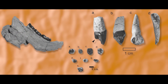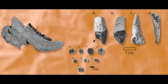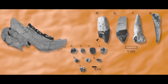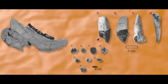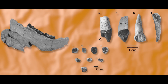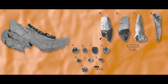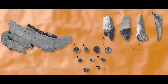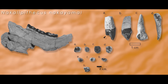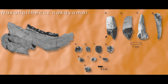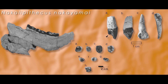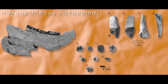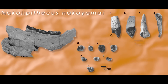With what little was preserved of this Nakali ape, the team of scientists got to work cleaning it all up and noting the preserved traits. Enough to name the holotype specimen — specimen KNM-NA 46400 — Nakalipithecus nakayamai: Nakali for the area, Pithecus meaning ape, and the species name in honor of Japanese geologist Katsuhiro Nakayama.